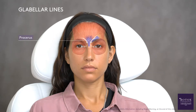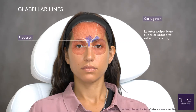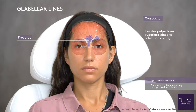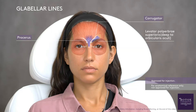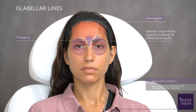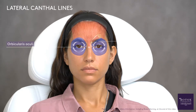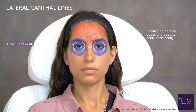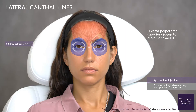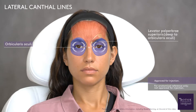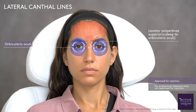The procerus muscle draws down the medial brow, and the corrugators draw the brow toward the midline. Repeated movements of these muscles contribute to vertical glabellar lines. The orbicularis oculi muscle closes the eyelid as it contracts, producing lateral canthal lines. Vertical fibers of the lateral section also pull down the lateral eyebrow. The distribution of radial lines differs among patients.